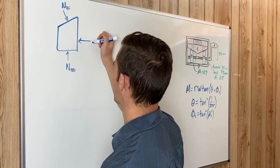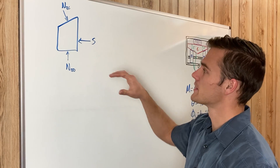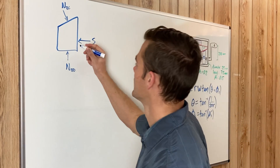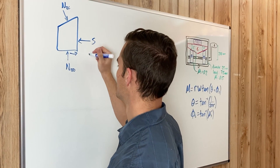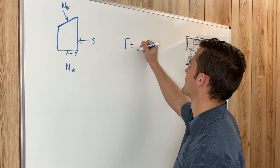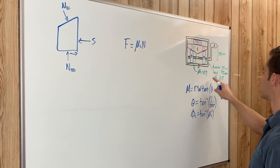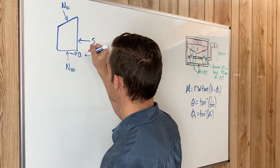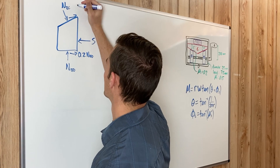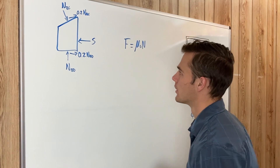We also have the screw pushing on this block — we'll call it S. The screw is pushing the block towards the middle, so the friction forces are going to be in the opposite direction of pending motion. Our friction force equals the coefficient of static friction multiplied by the normal force. Given that the coefficient of static friction is 0.2, the friction forces are 0.2·NBD on both surfaces.